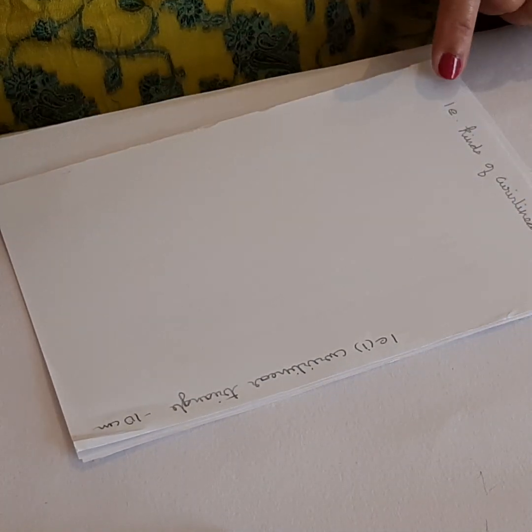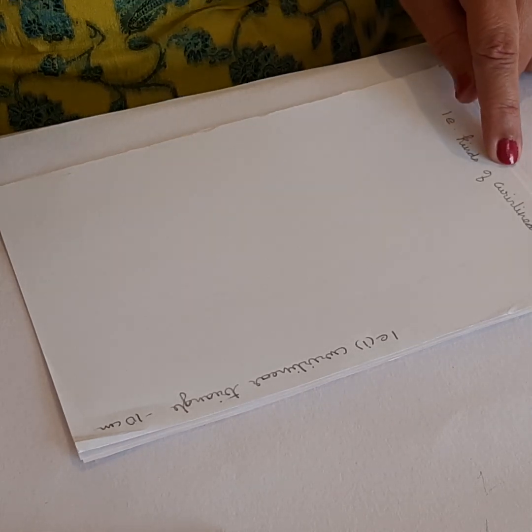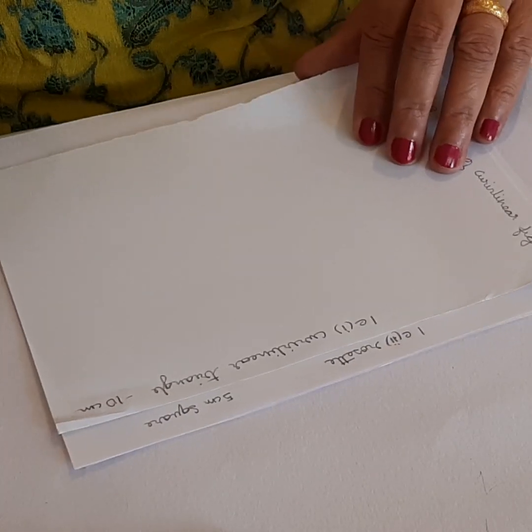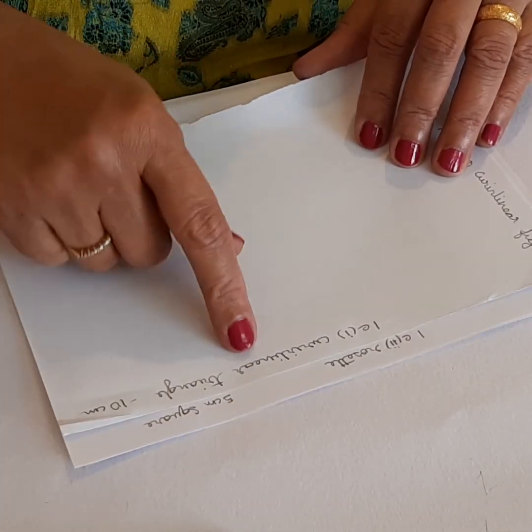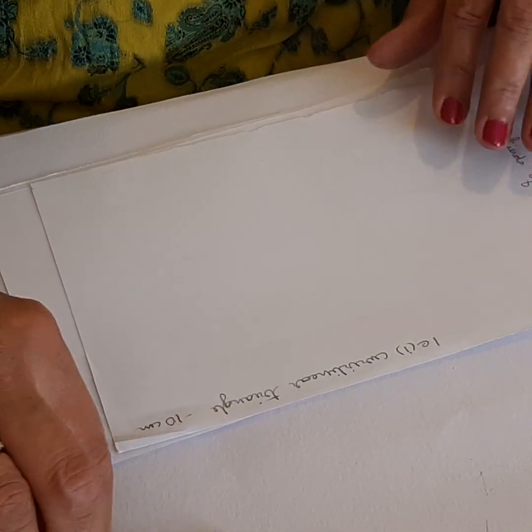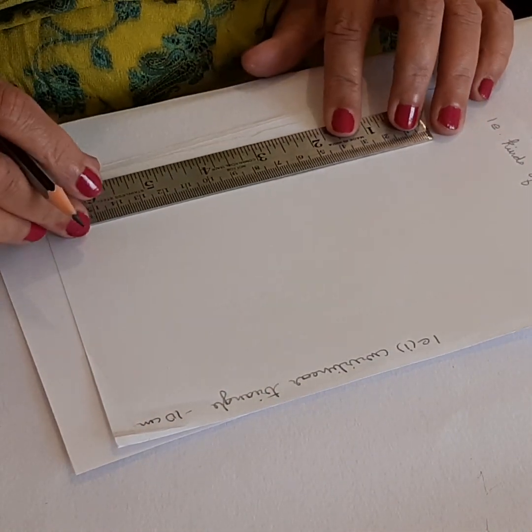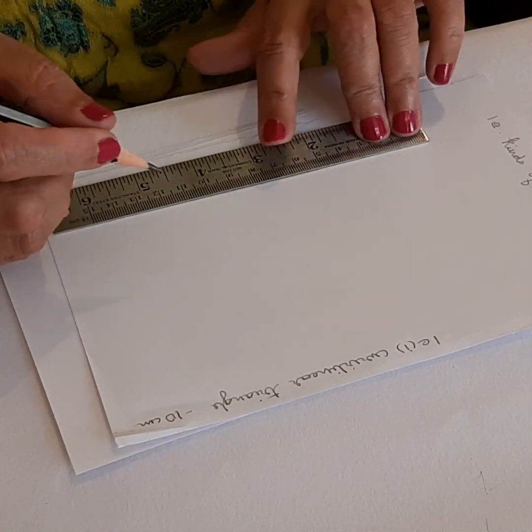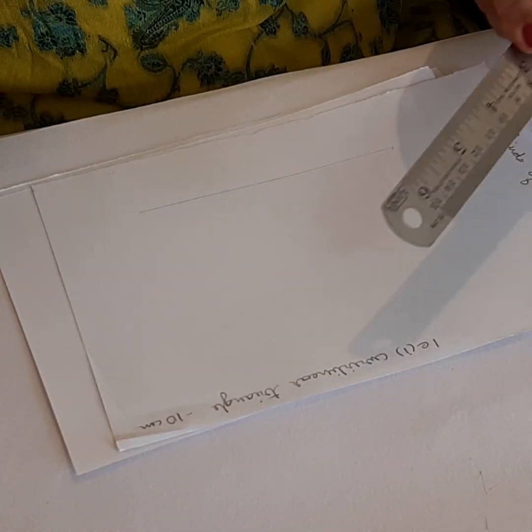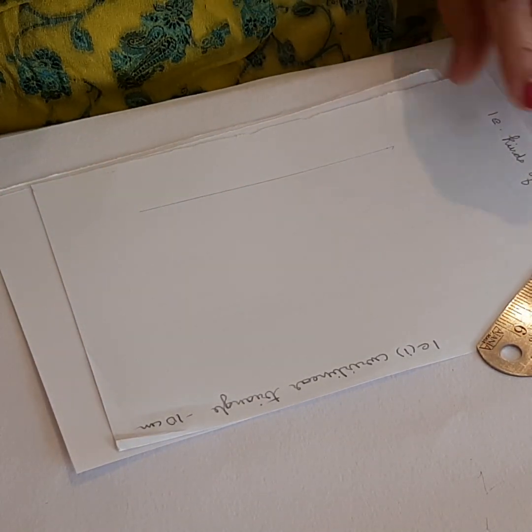Now we come to the fifth envelope, 1E, where you will have all kinds of curvilinear figures. Let's start with the first one, 1E1, the curvilinear triangle. The curvilinear triangle is going to have 10 centimeter sides. The construction for the curvilinear triangle is very much like an equilateral triangle. Let's draw a straight line, mark a point, and we are going to mark off 10 centimeters.